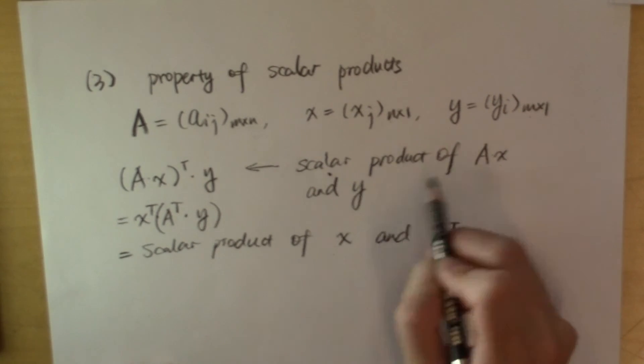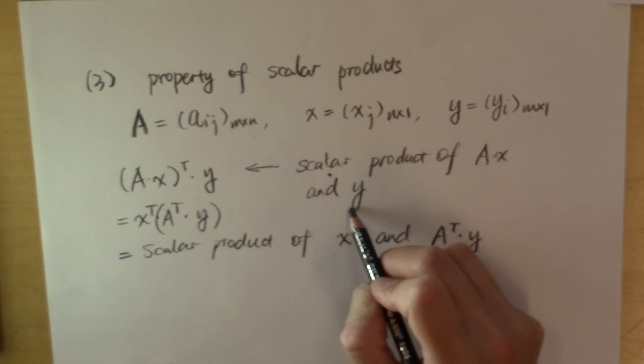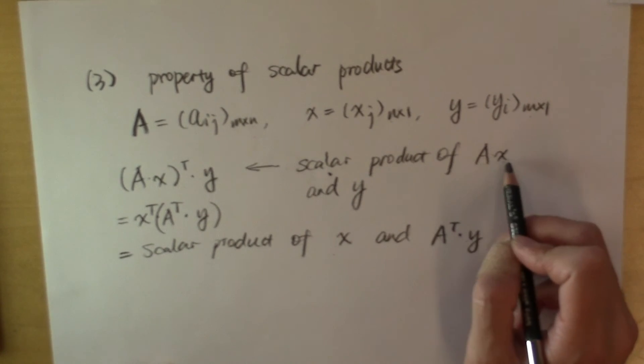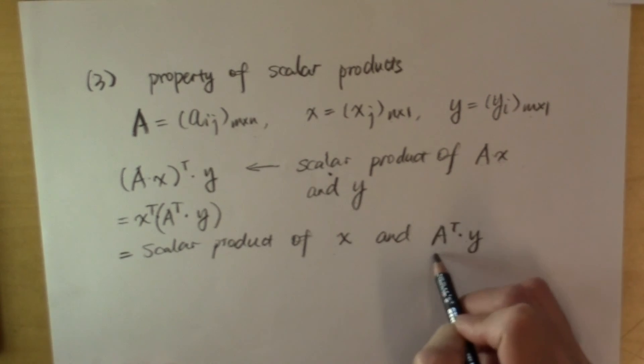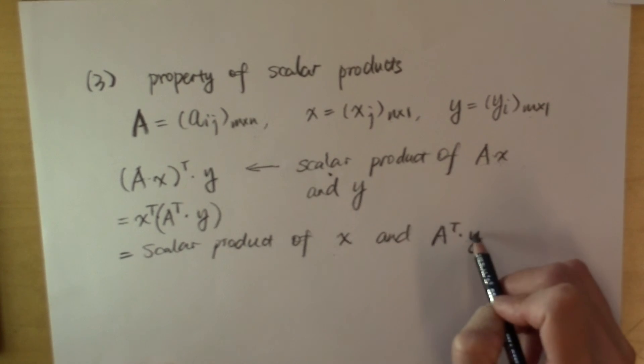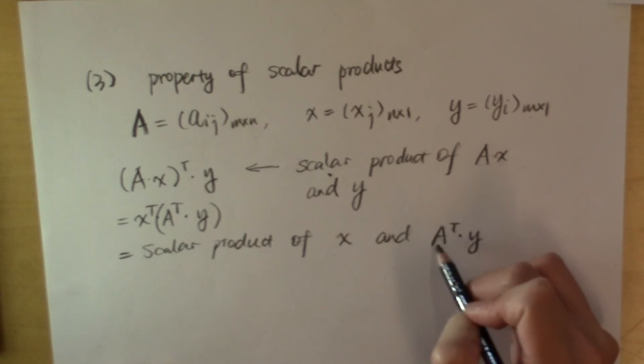So if we have two vectors, AX and Y, and X carries a matrix with it, and we want the scalar product of these two vectors, then we can shift this matrix to the vector Y by taking the transpose of that matrix.